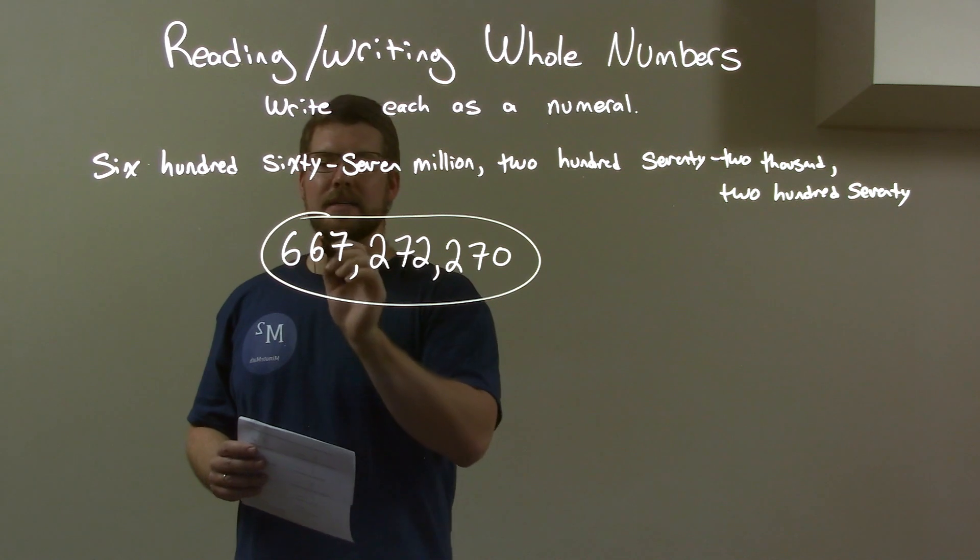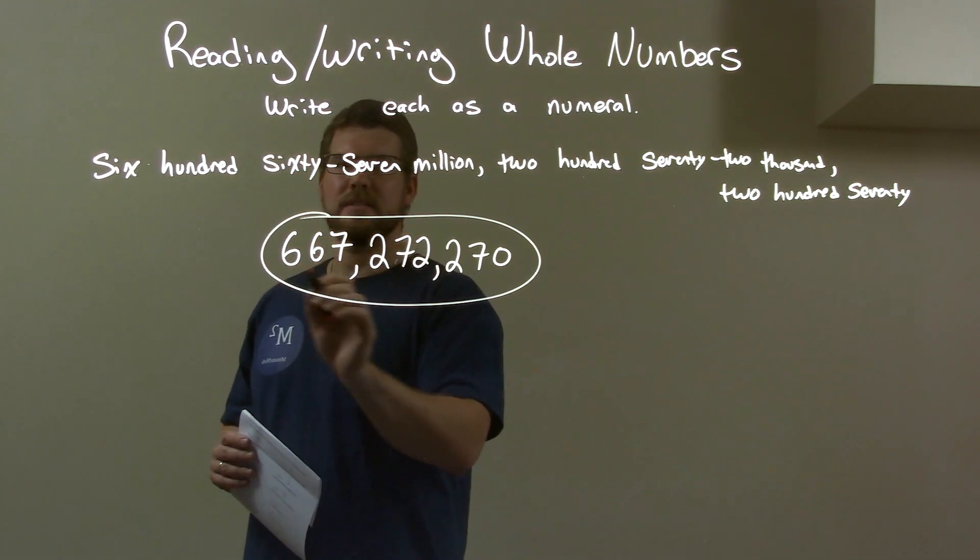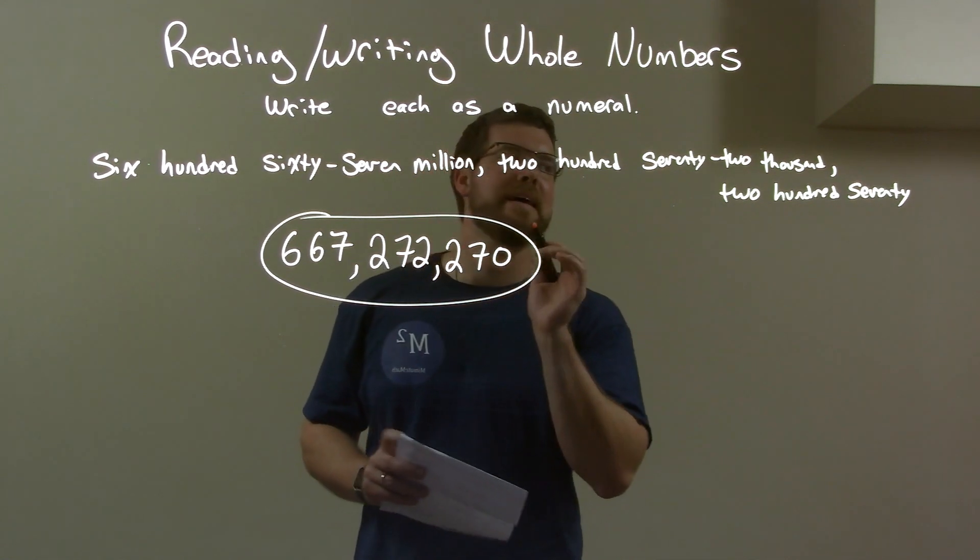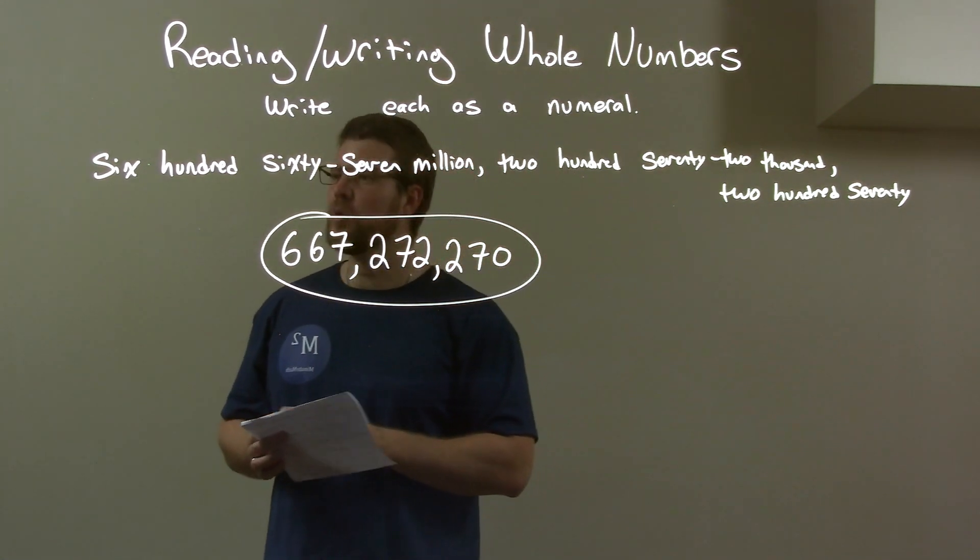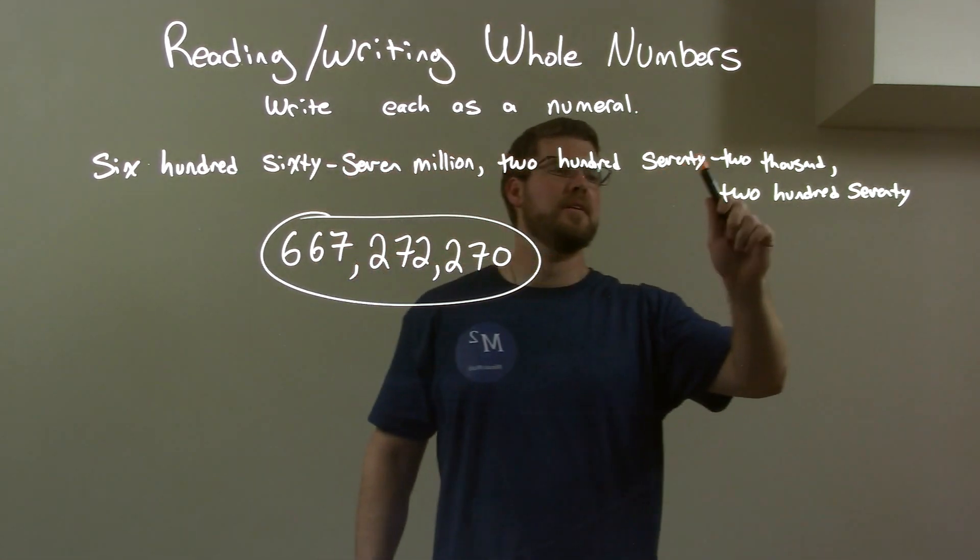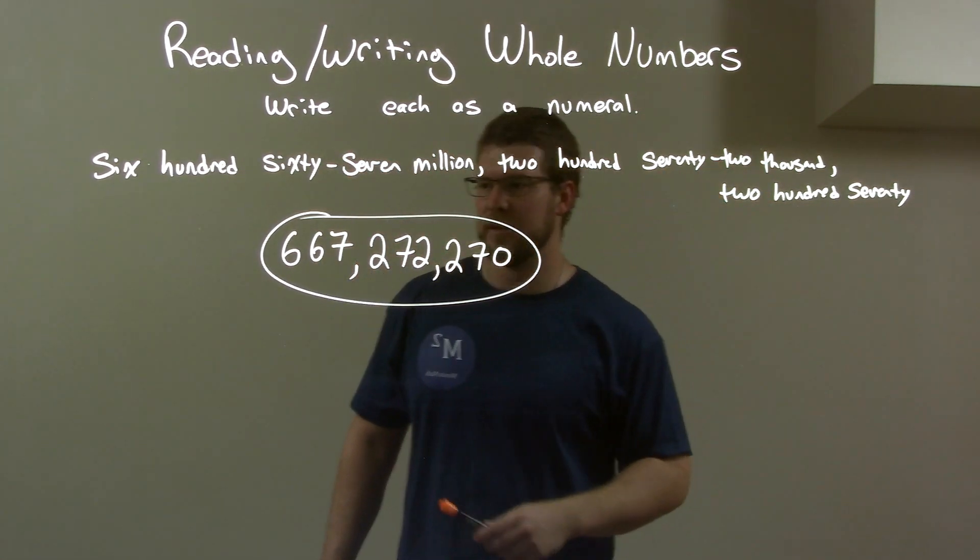We have our answer: six hundred sixty-seven million, two hundred seventy-two thousand, two hundred and seventy. So, quick recap, we have six hundred and sixty-seven million, two hundred and seventy-two thousand, two hundred and seventy.